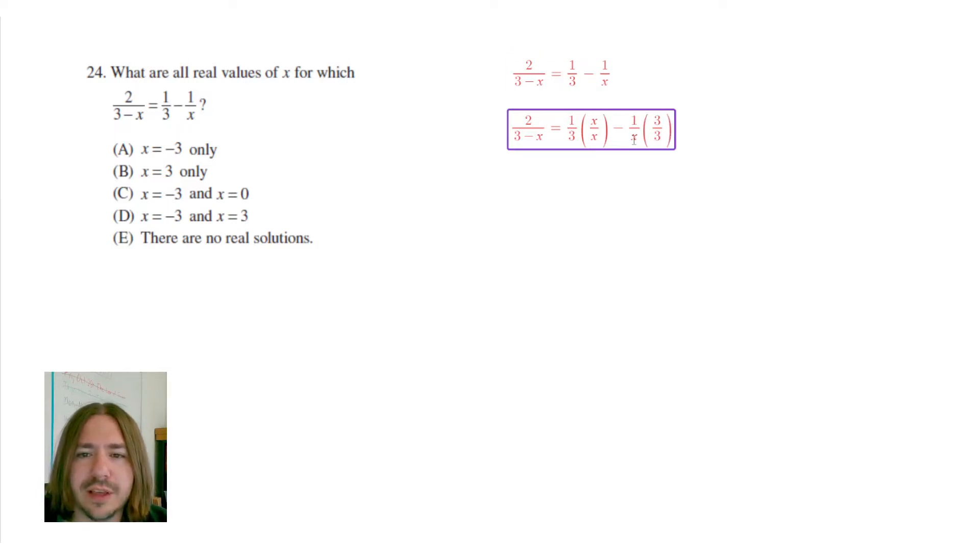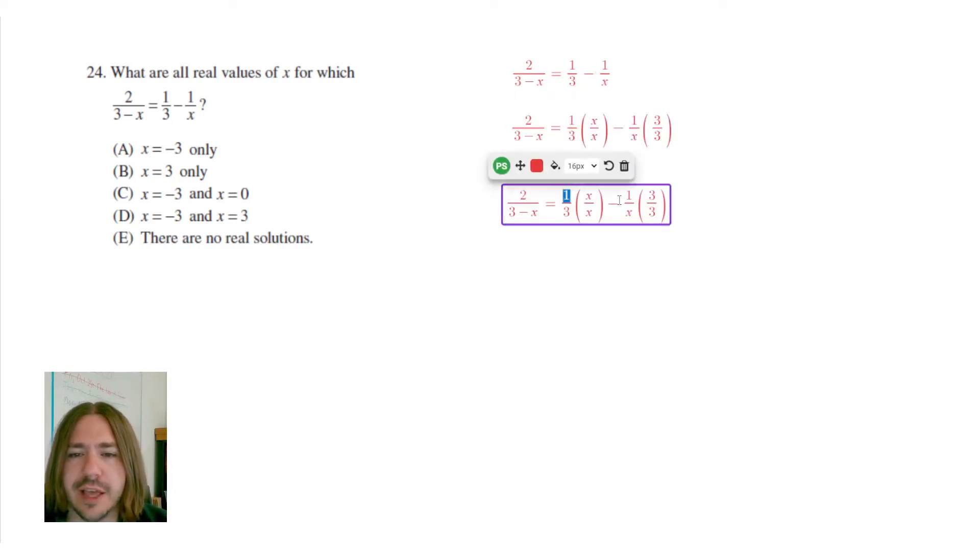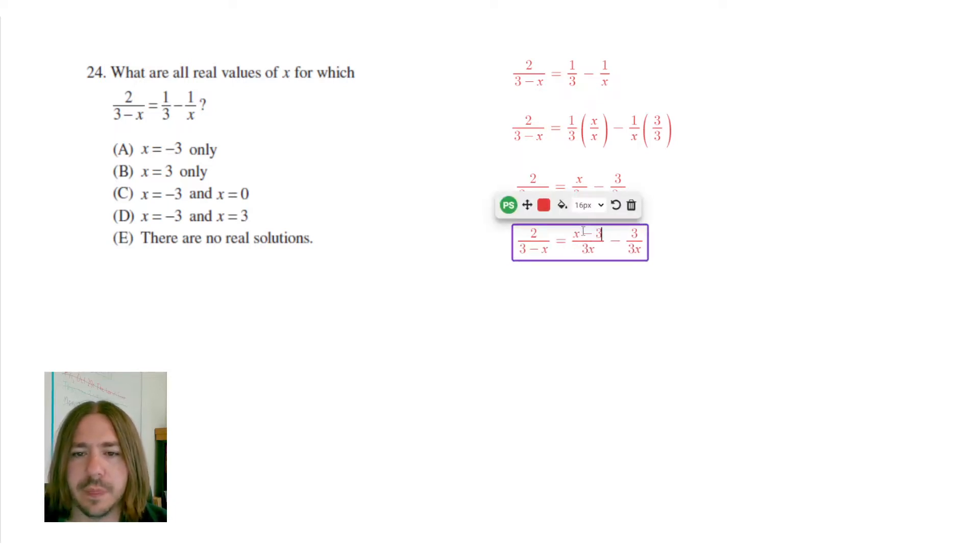Once we have it set up like this, we can go ahead and multiply those together so that we get that common denominator. 1 times x is just going to be x, and 3 times x is going to be 3x. Over here, 3 times 1 is 3, and 3 times x is going to be 3x. So now we've got a common denominator, so we can combine those two fractions. We'll end up with x minus 3 over 3x.